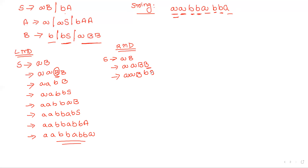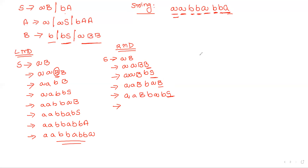Capital B is replaced with bS — a production starting with 'b'. Then in the next step we replace the rightmost non-terminal, capital S. According to the string, S → ab. In the next step we replace the remaining capital B with bS. Then S is replaced with ba, completing the middle portion of the string 'aabbab'.